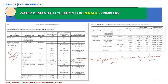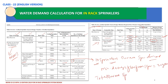From that table we determined how many sprinklers to consider. From Table 25.12.3.1 we can calculate the minimum design flow for one in-rack sprinkler. For Class 1 through Class 4 with storage height more than 25 feet, we consider a flow of 30 GPM per sprinkler. So the total in-rack sprinkler demand will be 10 multiplied by 30, giving 300 GPM.